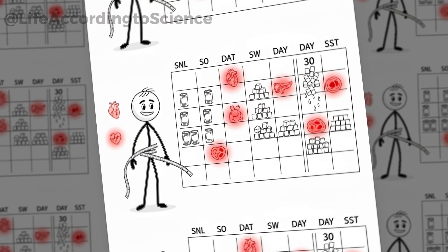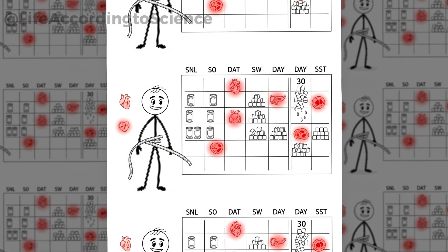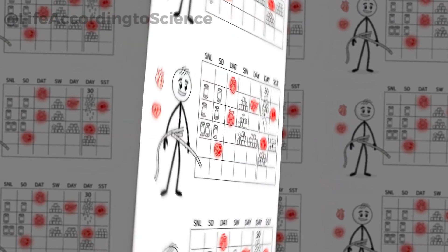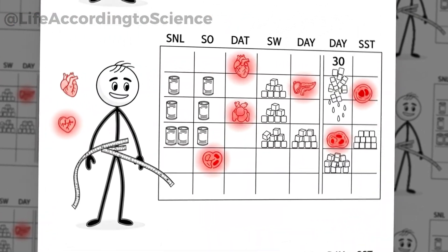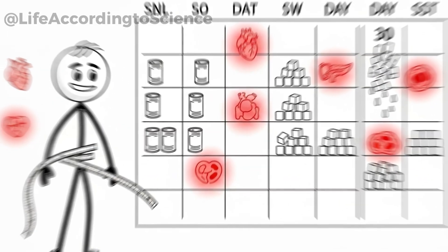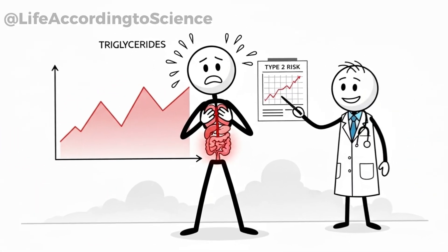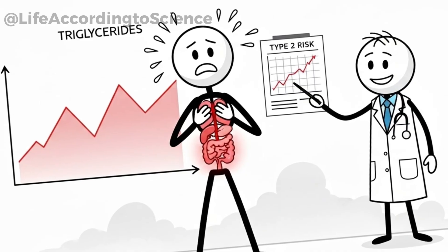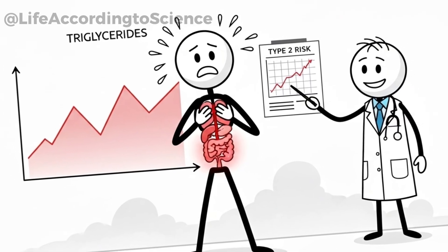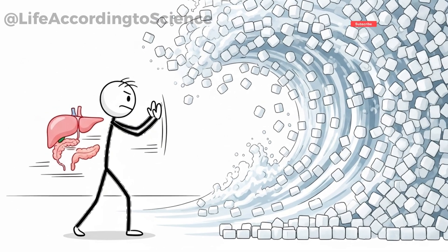Over 30 days, this constant sugar overload doesn't just affect your waistline. Studies show it can contribute to insulin resistance, higher triglycerides, and even increased risk of type 2 diabetes. Your body essentially goes from managing occasional sugar to being overwhelmed by a relentless daily attack.